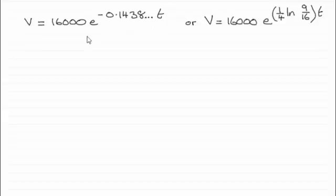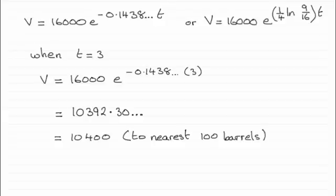So if we're to find the volume after three years, it's just a simple case of substituting t equals 3 into either one of these equations. And to save time, if you've done that, this is what you should see, that when t equals 3 substituted in, I've substituted in the first equation here, you end up with 10,392.30 and so on.